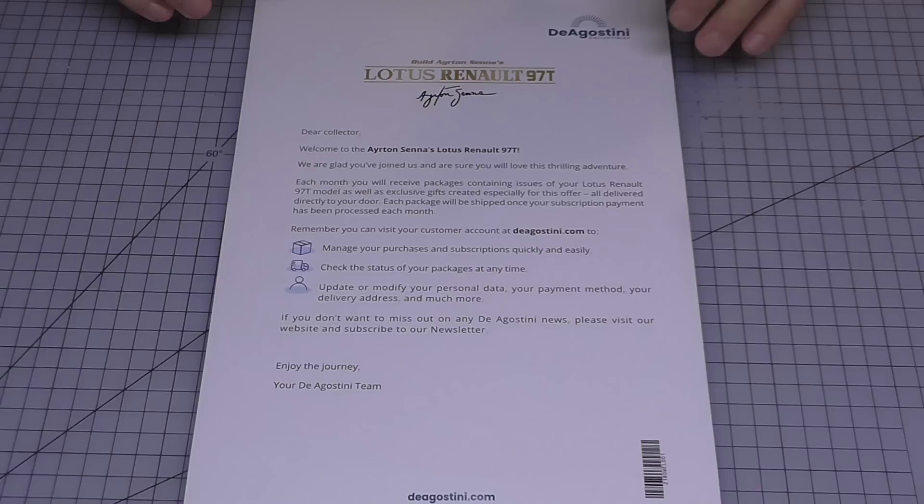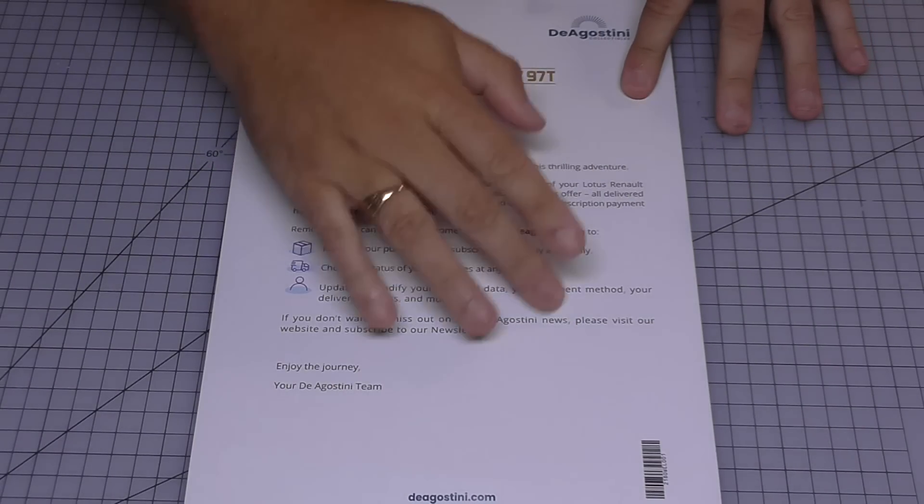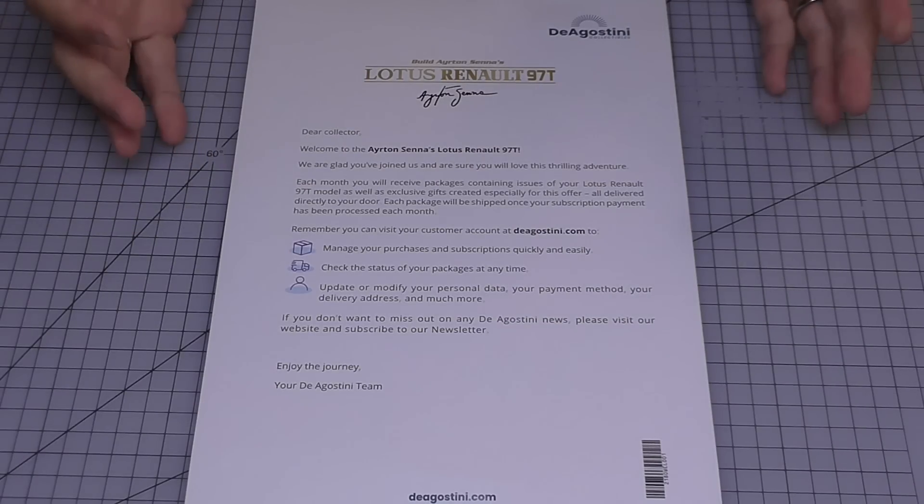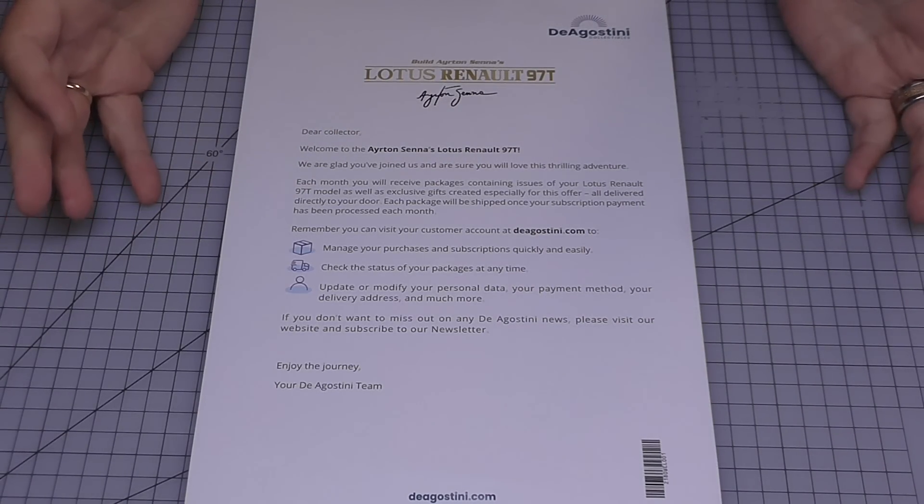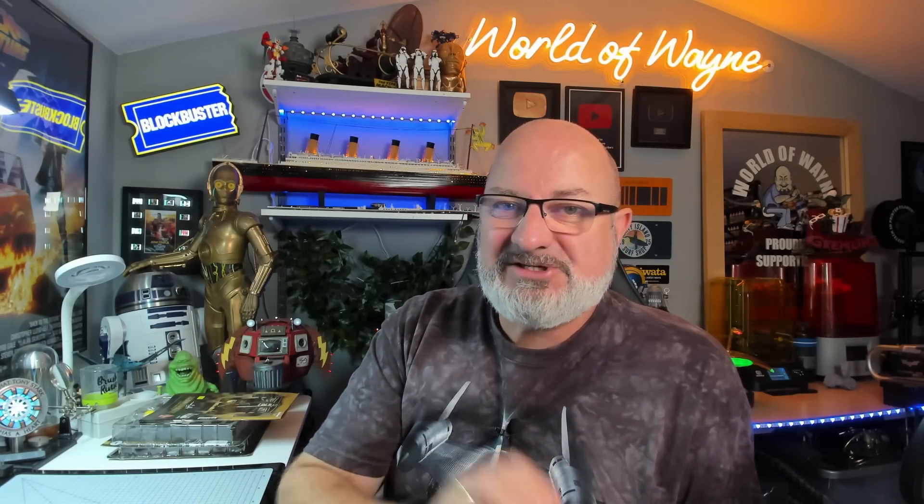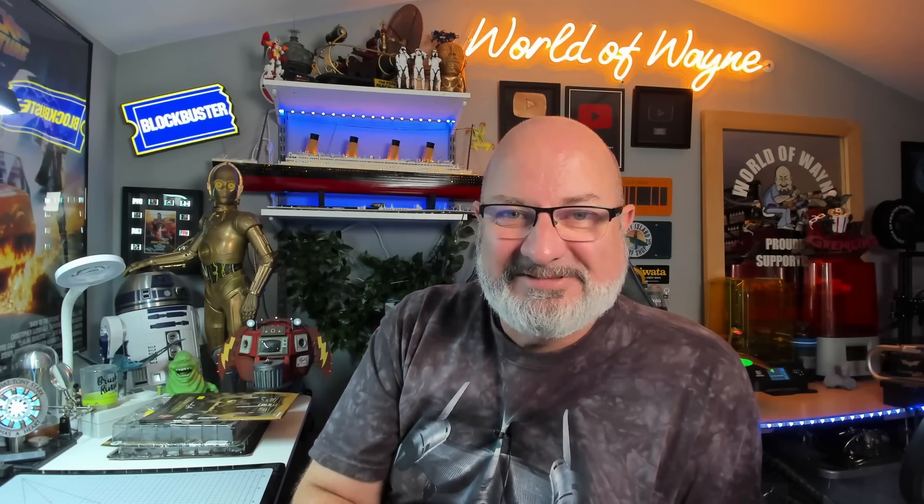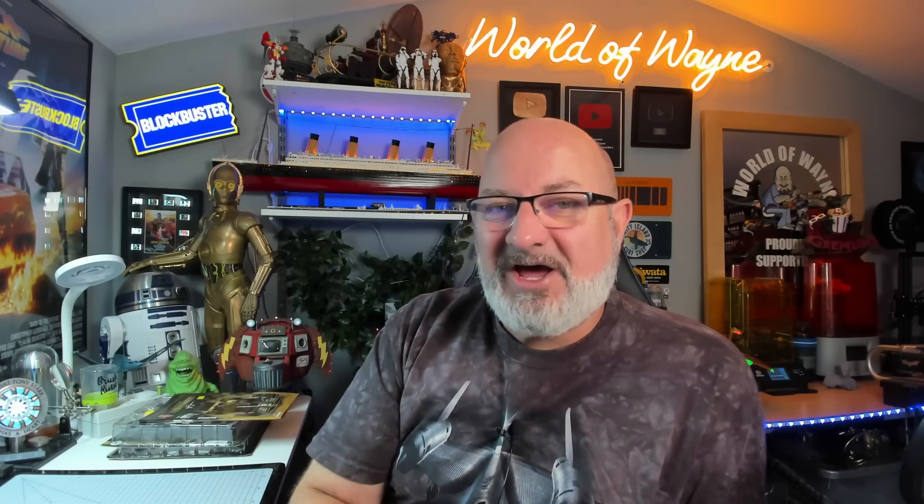That's the brochure and we do get this welcome letter here welcoming us to the collection, saying how we can go on the DeAgostini Collectibles website and you'll be able to manage your account on there. You'll be able to see when the next packs have been posted out to you as well. If I had my way I'd have a whole collection of Formula One cars because they look absolutely amazing, especially after my trip to Silverstone this week. I'm really in the zone when it comes to Formula One. But let's start this, so without further ado, let's get cracking.